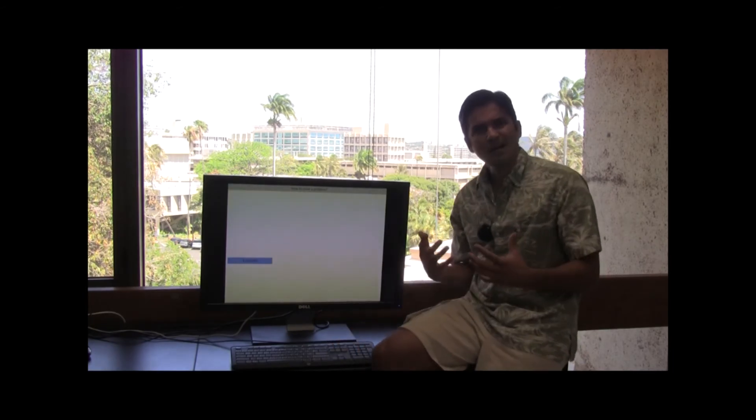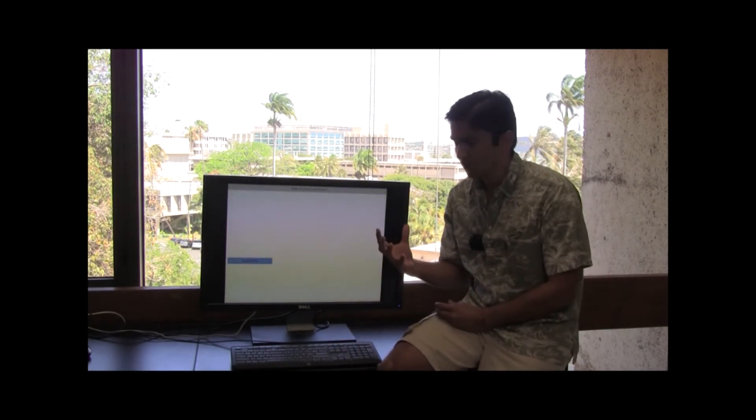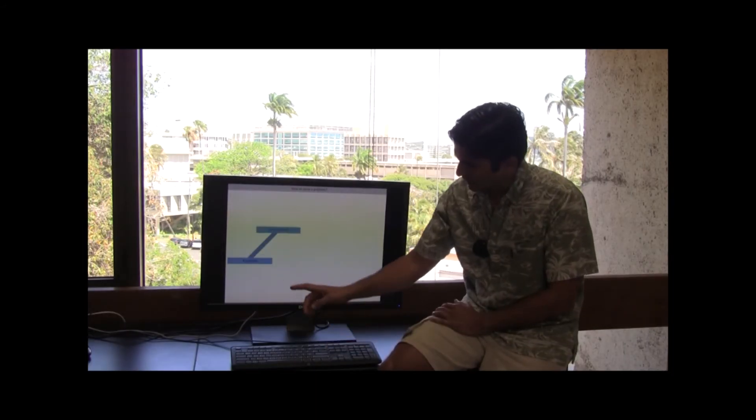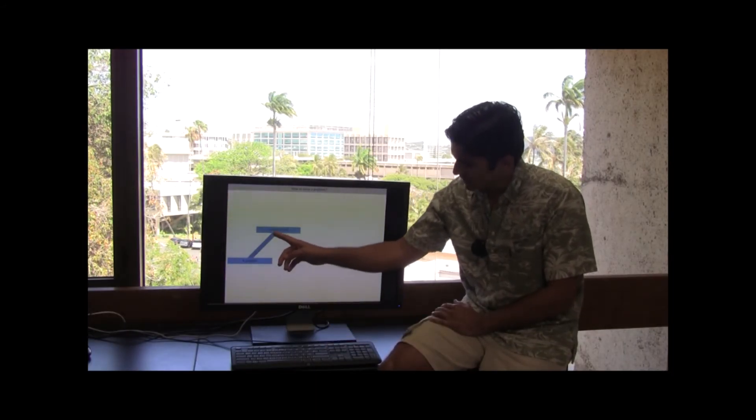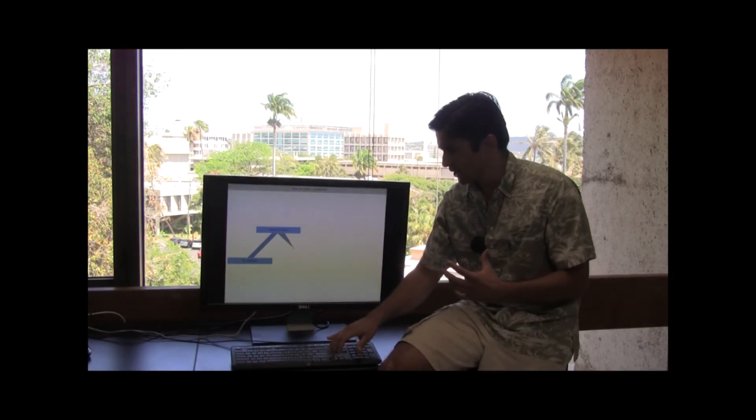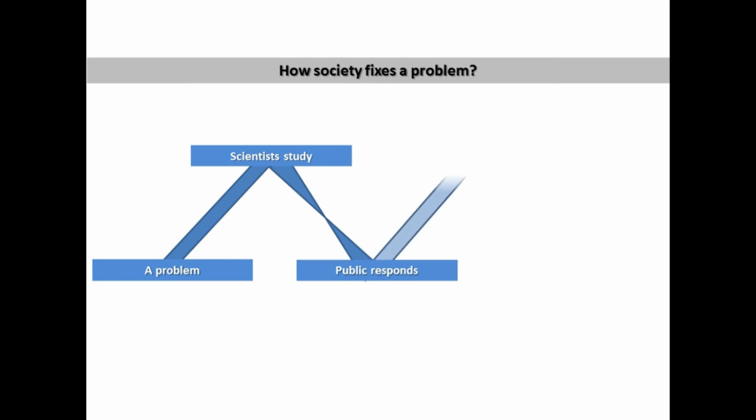Now, the challenge, how do we fix this problem? We have already identified how society fixes this problem. One of the things that happens initially is that scientists identify the problem and they do a lot of research. All of this information then is passed to the public. In response to the concerns of the public, politicians will act and they will generate policies that will generate a solution.